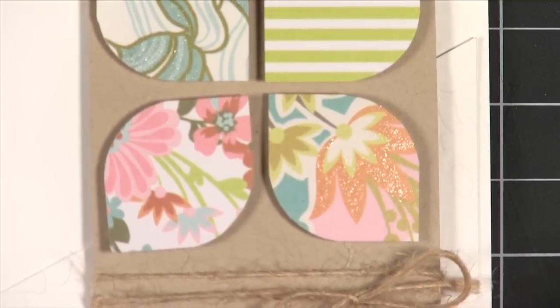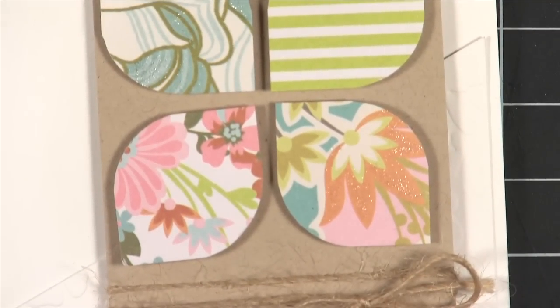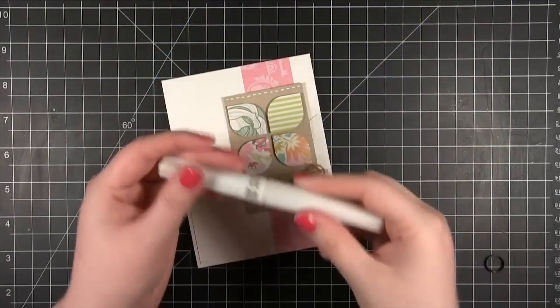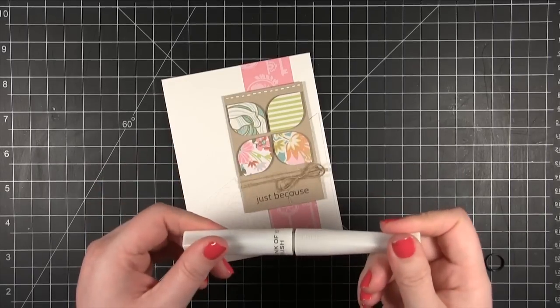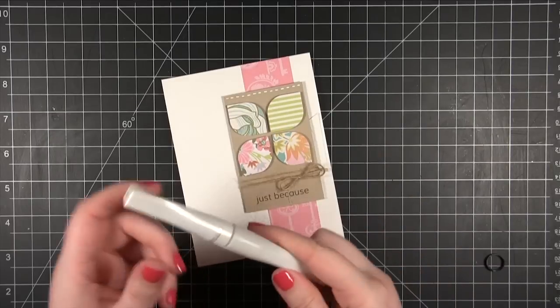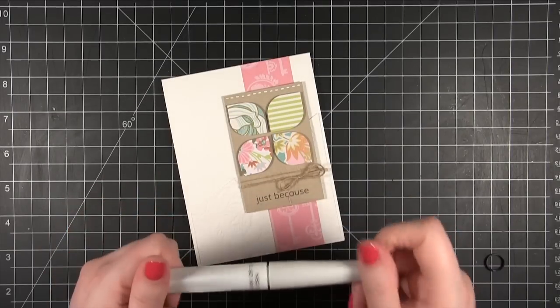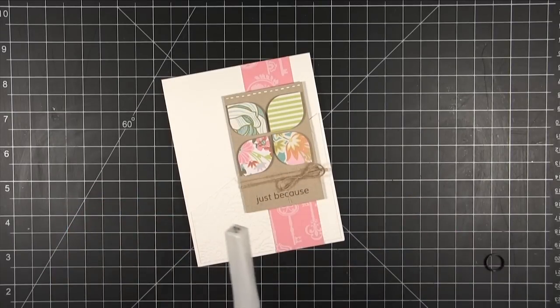It's wet right now. Once it dries it will kind of shimmer back even more. So it's just a little wink. Hence the name Wink of Stella. So that is the Wink of Stella Clear Glitter Pen. Hope you guys try it out. I kind of really like it. Struggled with it at first, but once I figured out how to make it work I absolutely love it. So thanks for watching and I'll catch you guys next time.